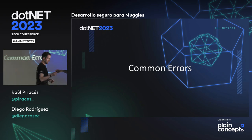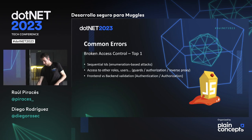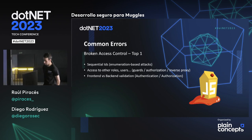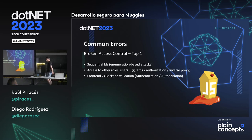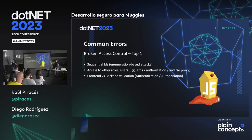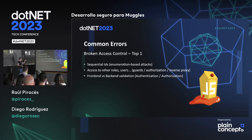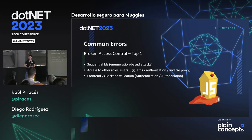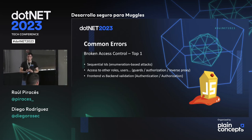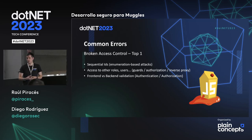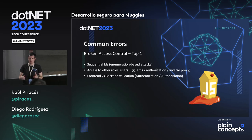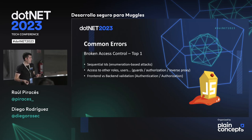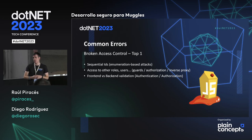Vamos a empezar con la parte de Common Errors, el primer ejemplo: rotura de control de acceso. Está dentro del OWASP Top 10, un listado de las vulnerabilidades o ataques más comunes. Broken access control ocurre porque la autenticación y la autorización son temas difíciles. Si tenemos roles en nuestra aplicación, los tenemos que tener bien definidos, con permisos claros para cada usuario, aplicando la regla del mínimo privilegio. También hay que evitar la enumeración de recursos.